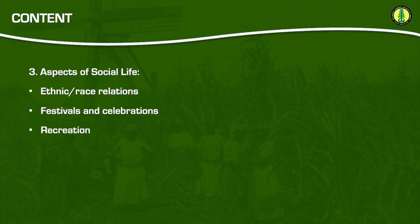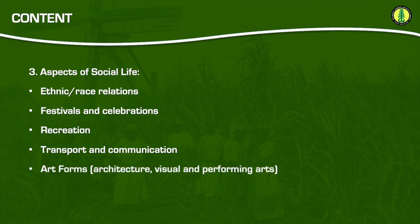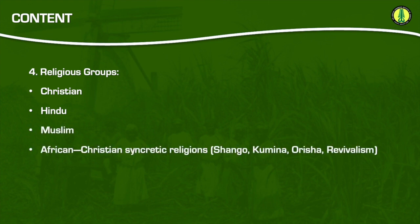Next, you'll look at various aspects of social life. These include ethnic and race relations, festivals and celebrations, recreation, transport and communication, and art forms. The next area of content that the syllabus requires us to look at are the different religious groups that have played a role in Caribbean society. These include Christian, Hindu, and Muslim groups, as well as African Christian syncretic religions and indigenous religions such as Rastafari.